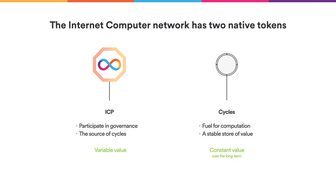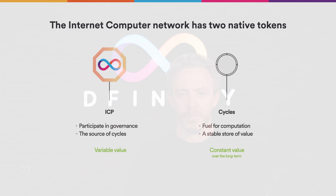ICP is the network's master governance utility token and it can be used to participate in governance and is the source of Cycles. Cycles, meanwhile, power computation in the role of fuel. They also have a constant value over the long term, which contrasts with ICP whose value will naturally vary over time.